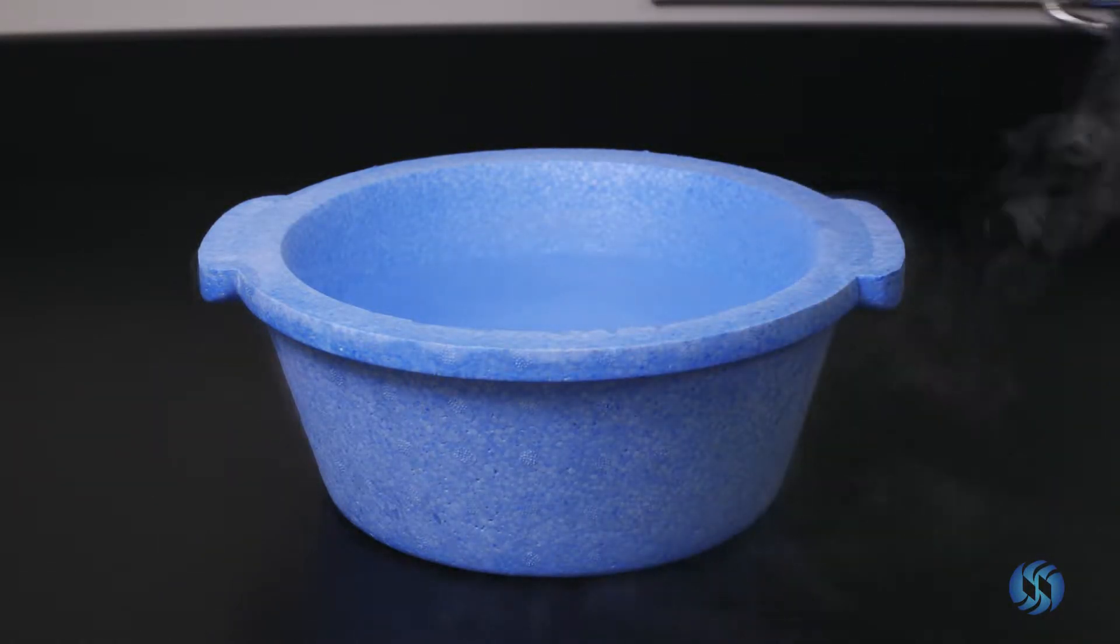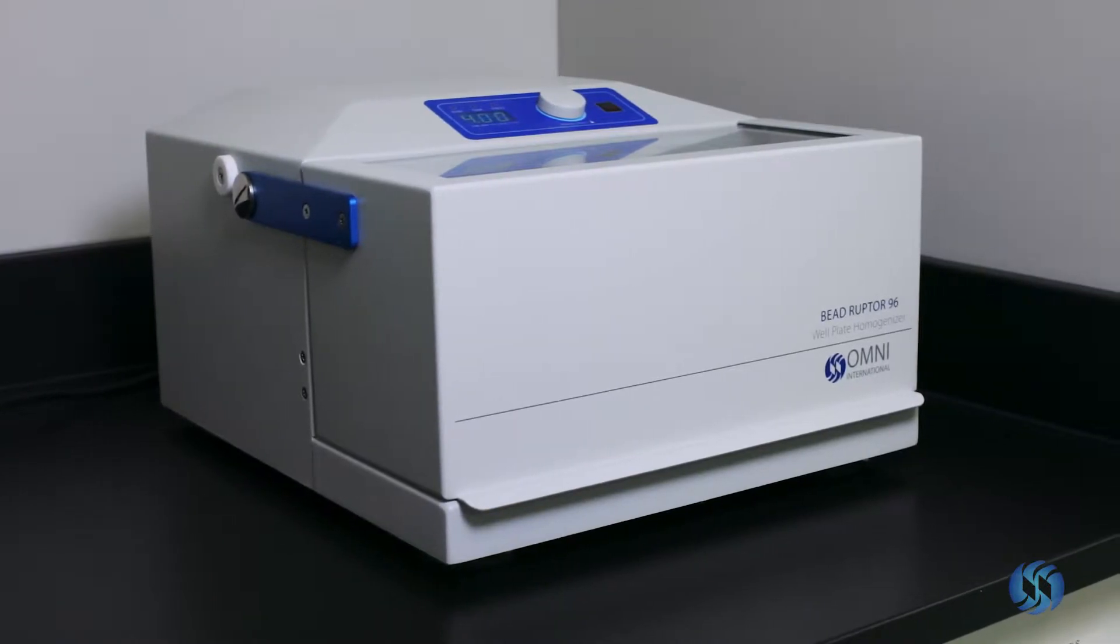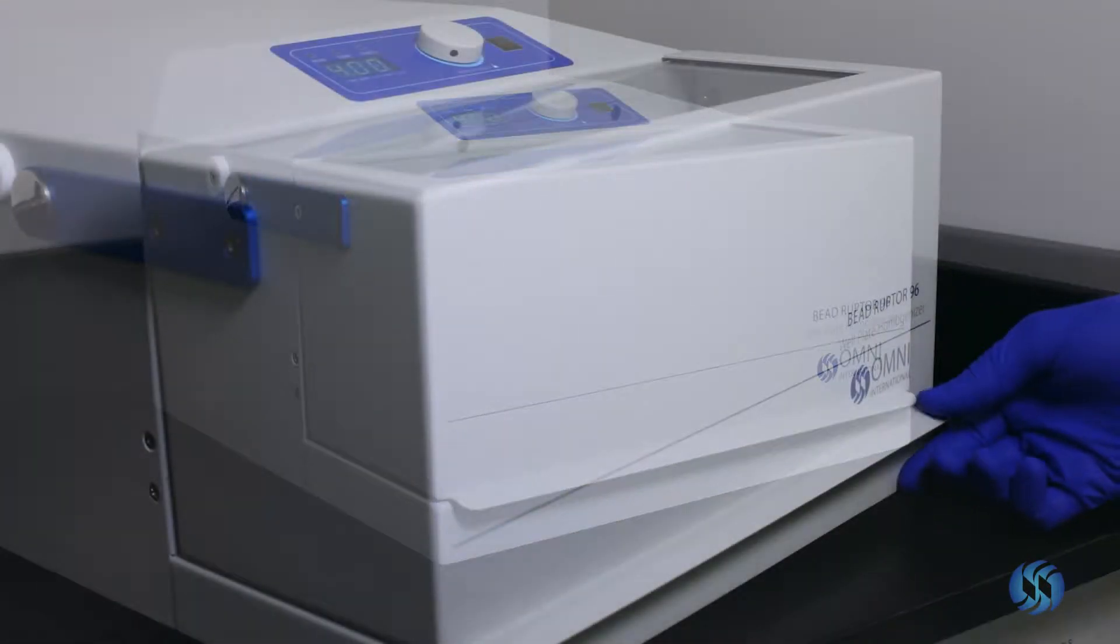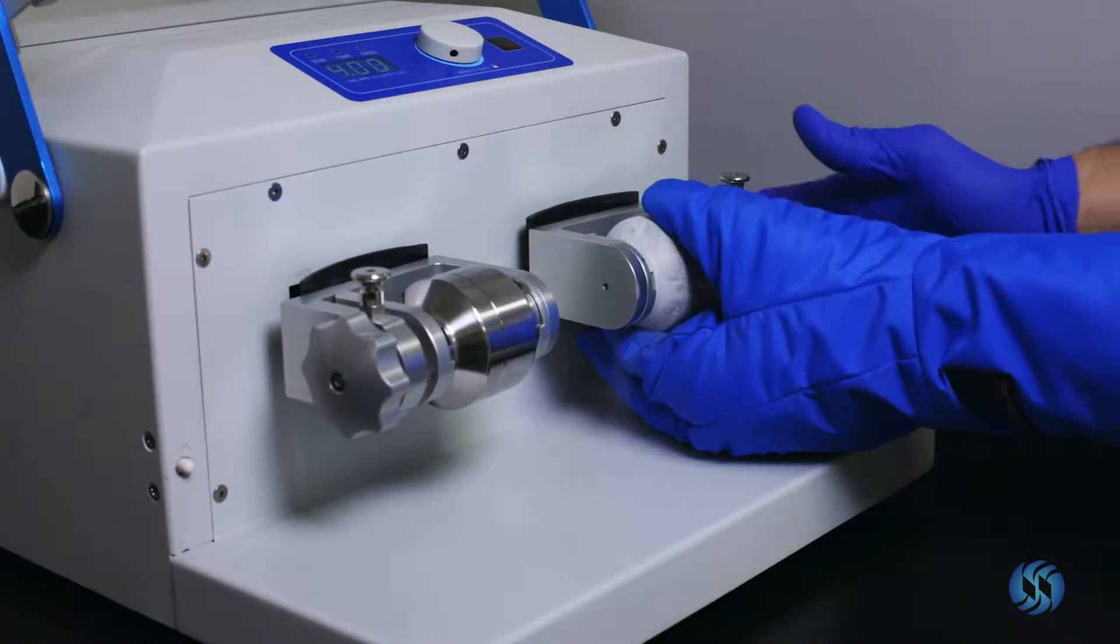Check the jar seal to ensure that no sample contamination has taken place. Place the milling jar into the BeadRuptor 96, fastening the clamp securely.